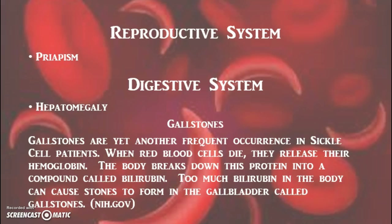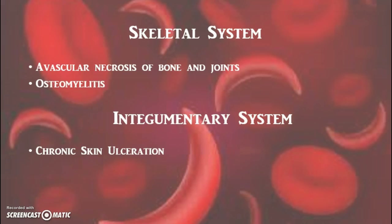Priapism — painfully long-lasting erections in male sickle cell patients — is one way the reproductive system is affected, and this condition can lead to future erectile dysfunction. Gallstones caused by too much bilirubin in the body is a complication of the digestive system. Avascular necrosis of bones and joints and osteomyelitis are complications of the skeletal system, while chronic skin ulceration affects the integumentary system.